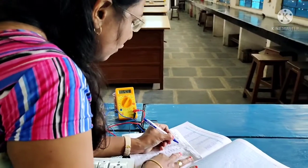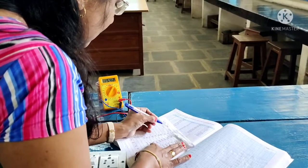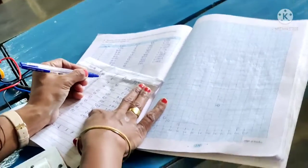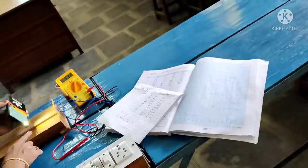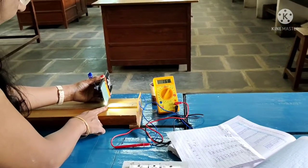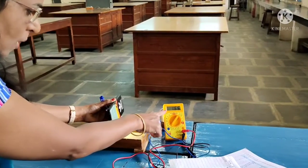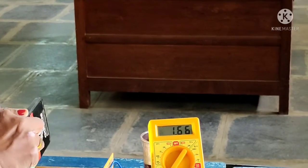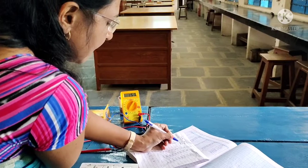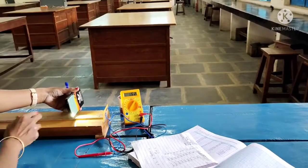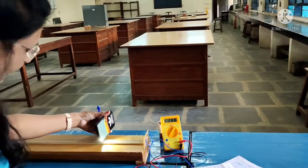Now here 10 centimeter distance, for 10 the reading is coming 1.67. Reading for 10 is 1.67.